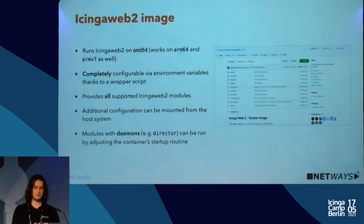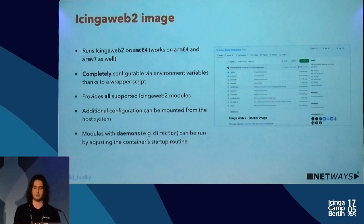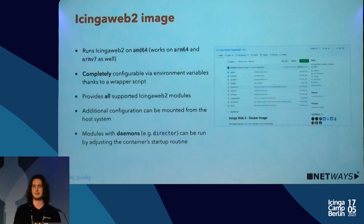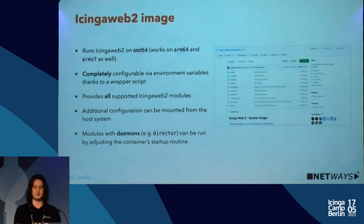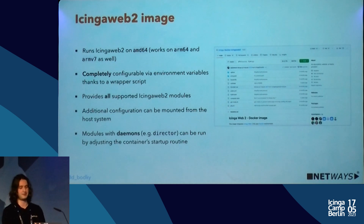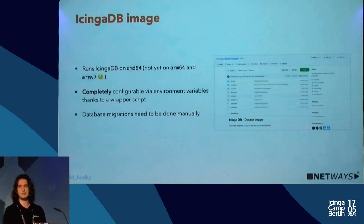The Icinga Web 2 image is only built for AMD64, but since it's a PHP web application it basically runs on ARM as well — I had no problems on my hardware. It's completely configurable with environment variables because one of Icinga's developers wrote a nice wrapper script which parses environment variables and generates all the needed config on the fly. Additional configuration can be mounted, and all modules with daemons can be run from inside the container, though some may be nonsensical in that context.